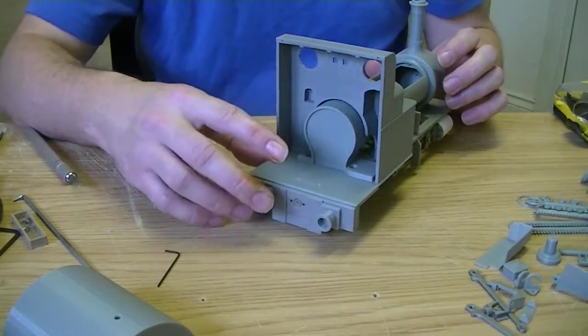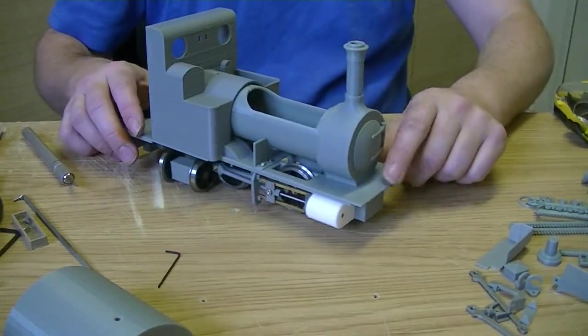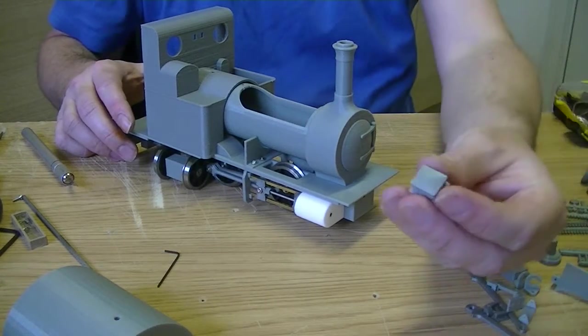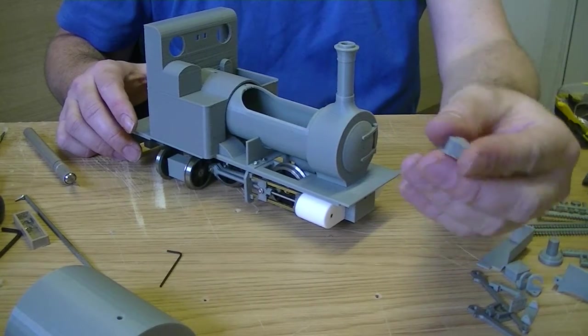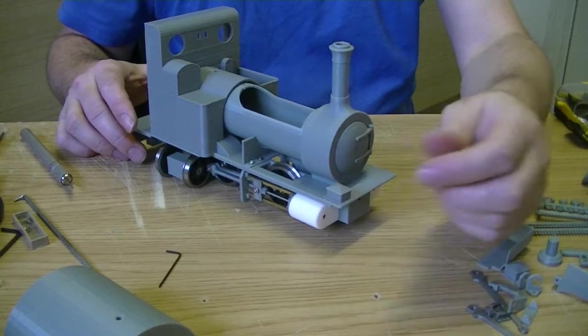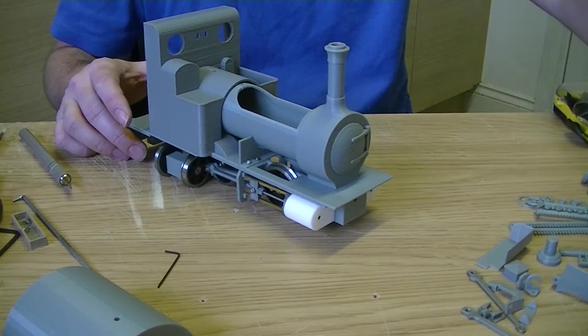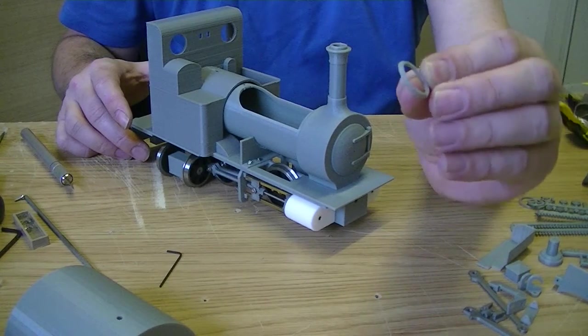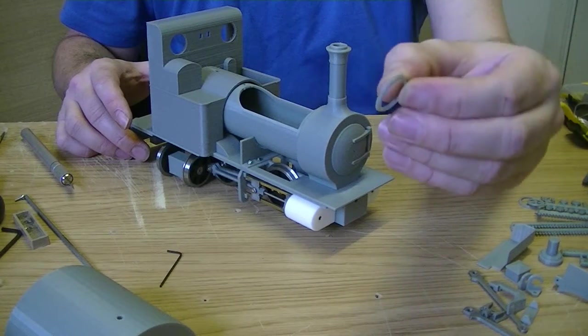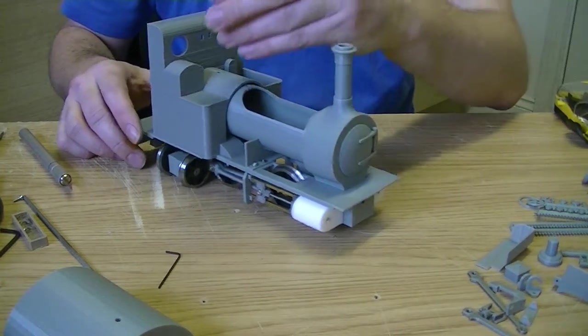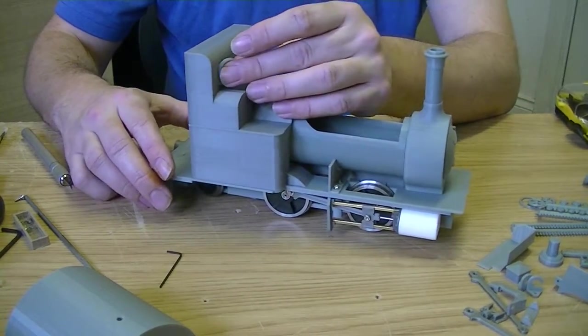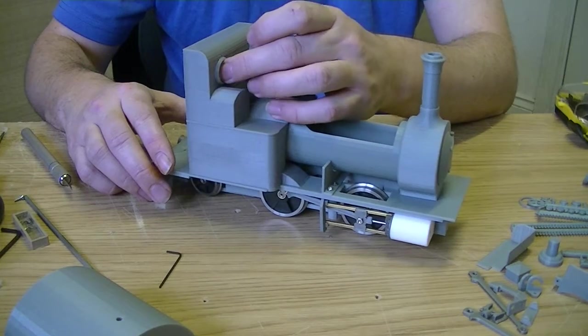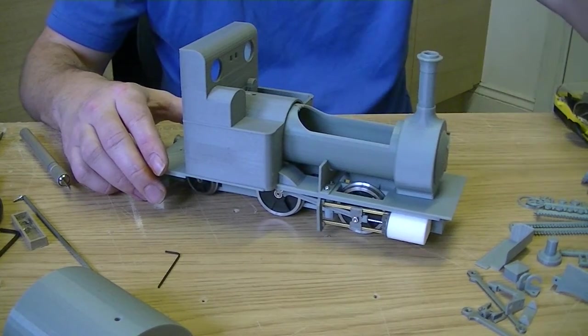Right, so now, we'll stick to the front now for a minute. You've got your sand boxes, straightforward, glue them on wherever you feel like. You have spectacle rings as you've printed, be careful, they are quite small. They get glued on around the window once you've painted them gold.